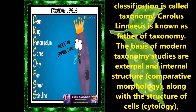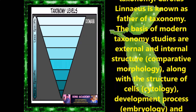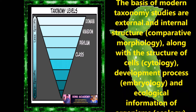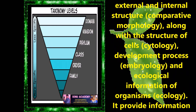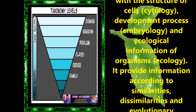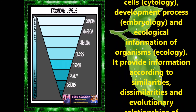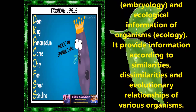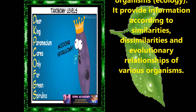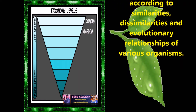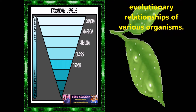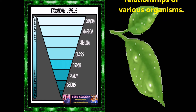Carolus Linnaeus is known as the father of taxonomy. The basis of modern taxonomy studies are external and internal structure, comparative morphology along with the structure of cells like cytology, development process, embryology and ecology. It provides information according to similarities, dissimilarities and evolutionary relationship of various organisms.